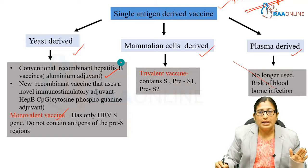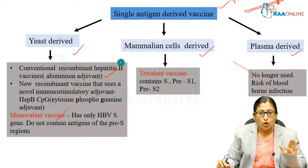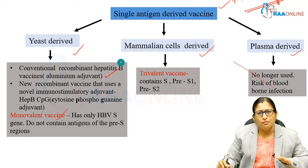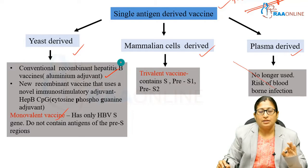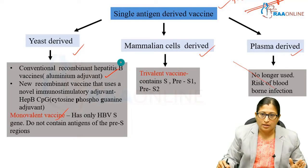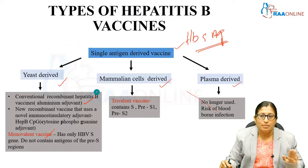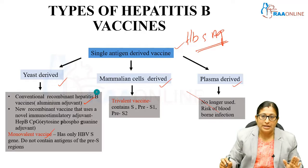You also have the mammalian cell-derived vaccine, which is a trivalent vaccine — meaning it contains all three regions: S, pre-S1, and pre-S2. It doesn't have much advantage over the yeast-derived vaccines, except that this vaccine is claimed to be more immunogenic in older individuals. The side effect profile is actually better with yeast-derived vaccines than with mammalian cell-derived vaccine, so there is no big advantage of mammalian cell-derived vaccines.